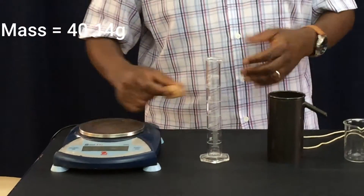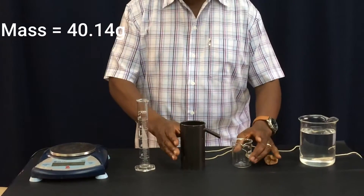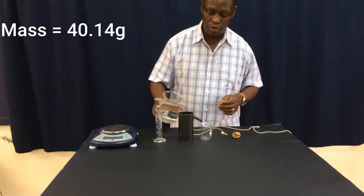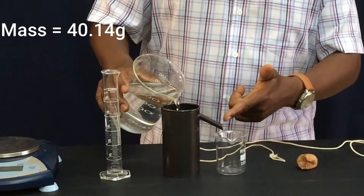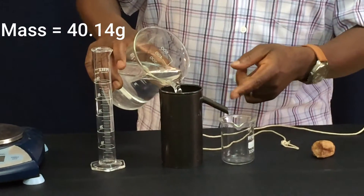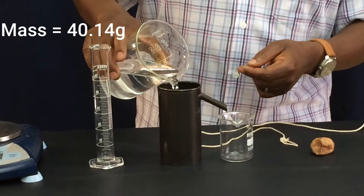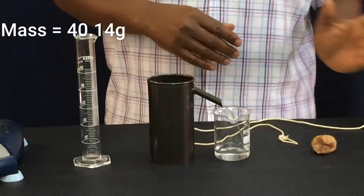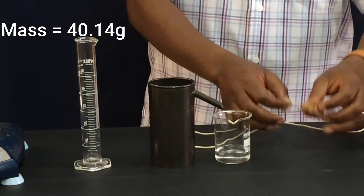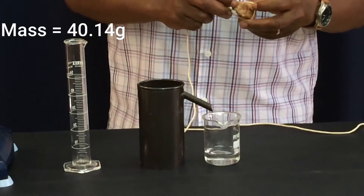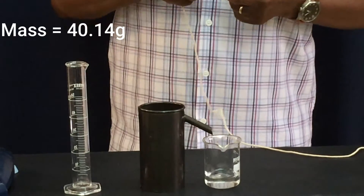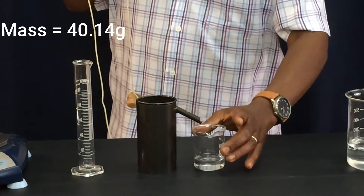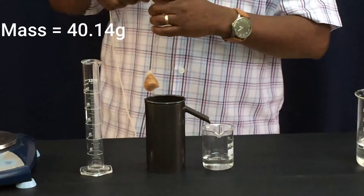After that I will want to determine its volume. What I will do is pour water into the eureka can — the overflow can — until the water overflows from the spout. This spout is the one that will determine that I've put in enough water. Once it overflows and the overflowing stops, I will tie my solid using a thin string, and then I'm going to trap any water that will be displaced using a measuring cylinder.